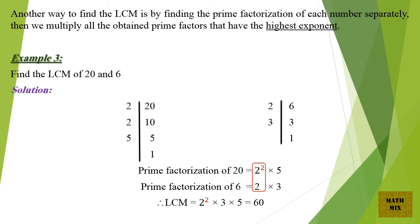Another way to find the LCM is by finding the prime factorization of each number separately, then multiplying all the obtained prime factors that have the highest exponent.